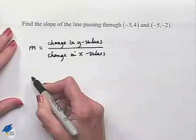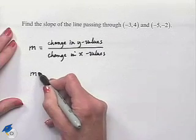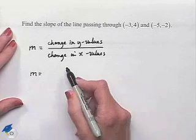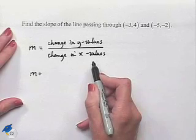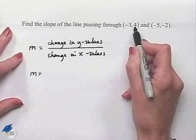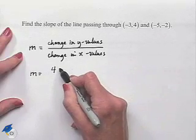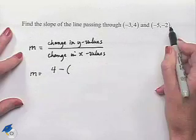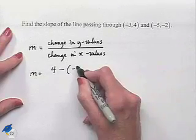To find the amount of change, we're going to subtract the y values in the numerator and subtract the x values in the denominator. We'll begin by taking a y value of 4 from our first point and subtract from that the y value from the second point, which is negative 2.